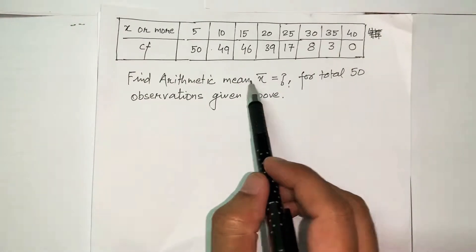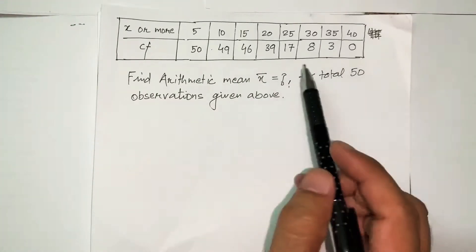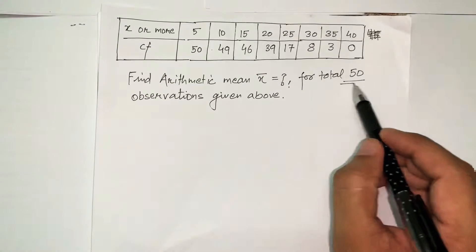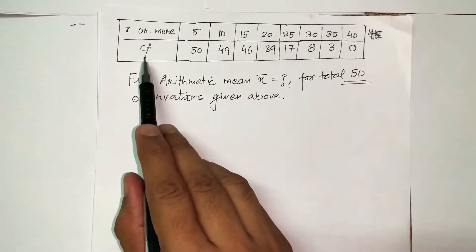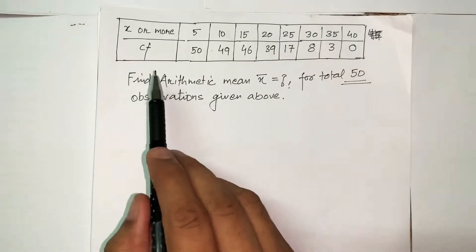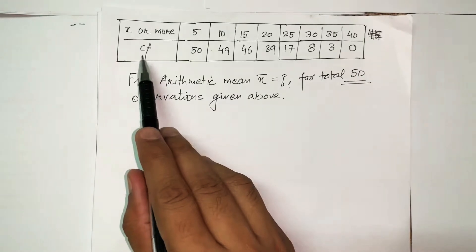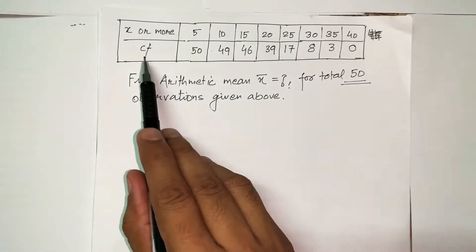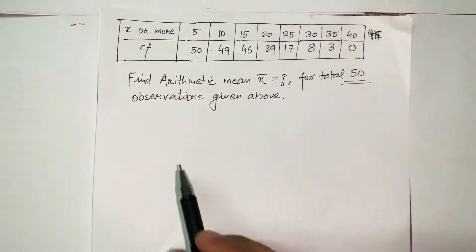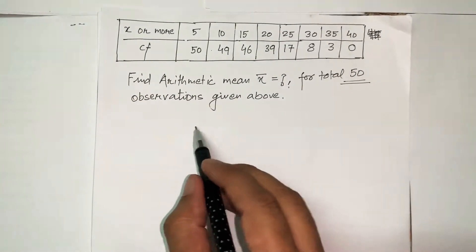I have to find the arithmetic mean for a total of 50 observations. There are two clear hints: total observations are 50, and the row heading confirms it is cumulative frequency. So I cannot solve this question directly — I first need to break the cumulative frequency into simple frequency. Let me explain the concept of cumulative frequency.